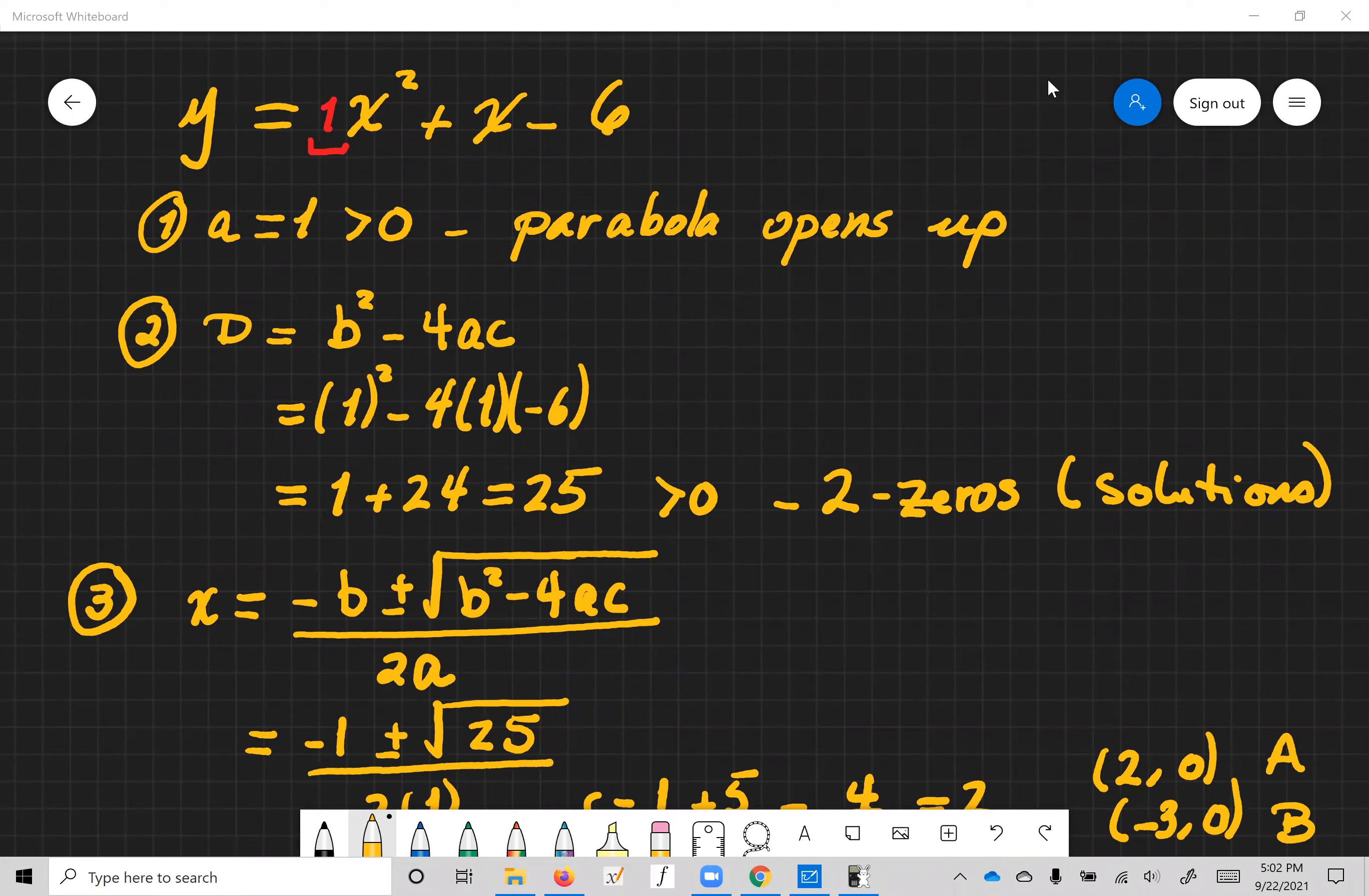Then we look at the discriminant. The discriminant is b squared minus 4ac. So b is 1, a is 1, c is negative 6. We plug these numbers in and we get basically the discriminant to be 25 which is positive.